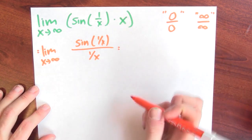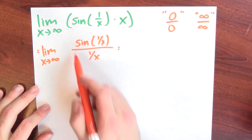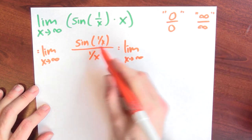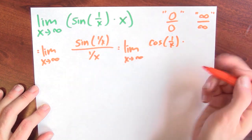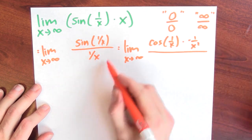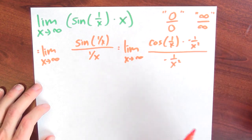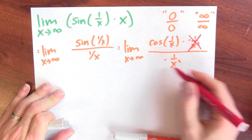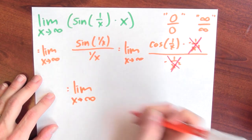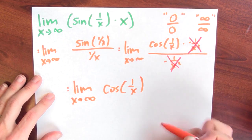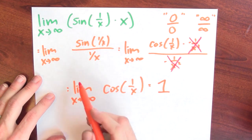By L'Hôpital's rule, I differentiate the numerator and differentiate the denominator, then look at that limit. The derivative of sine(1/x) is cosine(1/x) times the derivative of the inside, which is −1/x². I divide by the derivative of the denominator, which is also −1/x². The −1/x² in the numerator and denominator cancel, so this limit is the same as the limit as x approaches infinity of just cosine(1/x). Since 1/x gets very close to 0, and cosine of a number close to 0 is 1, this original limit is 1.